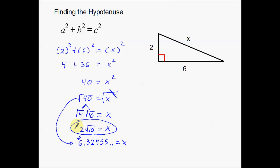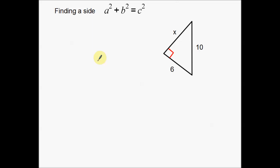So our third side, the hypotenuse, we can either say is 2 times the square root of 10, or we can say it is approximately 6.32. That is one example of finding the hypotenuse of a triangle. Now let's find a leg of a triangle.